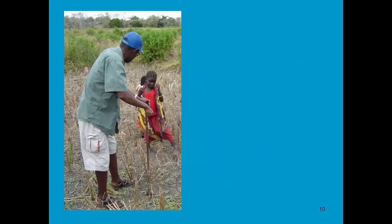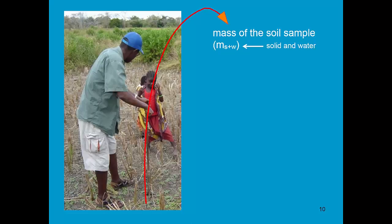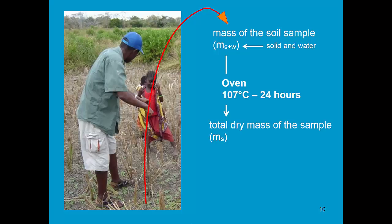To determine the mass water content, we go to the field and take a soil sample. We bring it to the lab and measure its weight — it is the mass of the solid and the water. Then we put it in a ventilated oven for 24 hours at 107 degrees. All the water has evaporated and we weigh it again, so the weight will be only the weight of the dry mass. To calculate the mass water content, we divide the mass of the soil water by the mass of the dry soil.